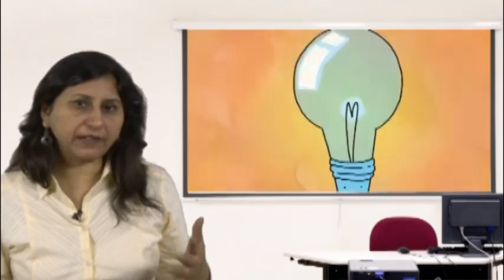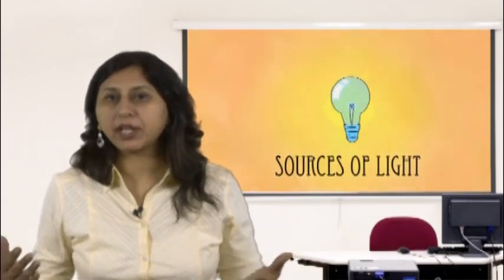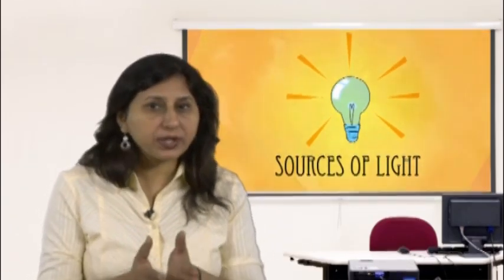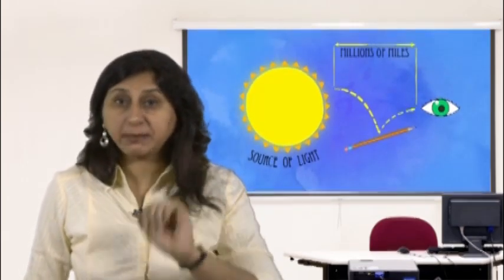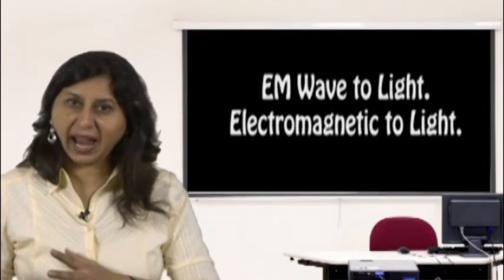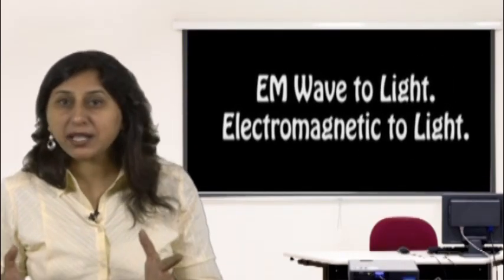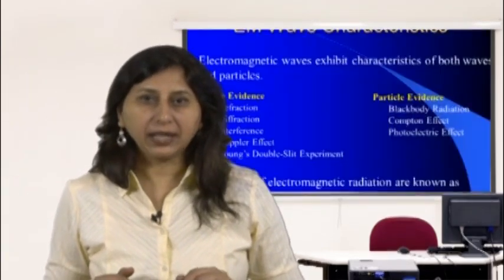We will first try to understand what wave optics is. Light-emitting objects like the Sun or electric bulb are known as sources of light. But what exactly is the thing that is emitted? Is it a particle like atoms, or is it a wave like ripples on the surface of a pond? Light is both a wave and a particle, and it depends on the situation how it behaves.